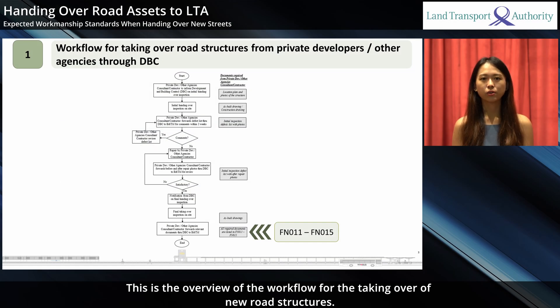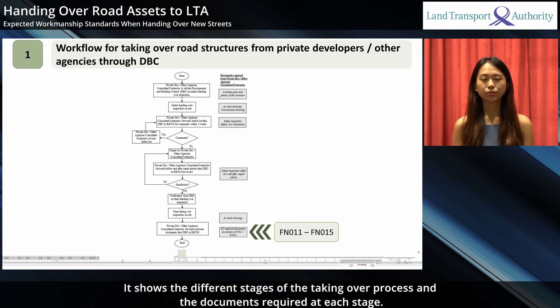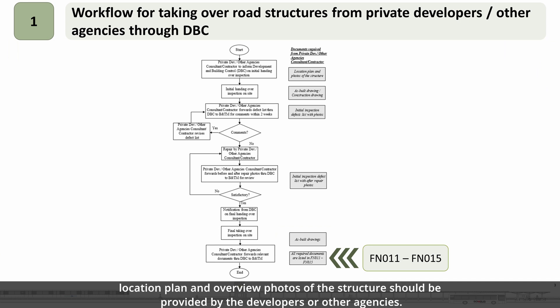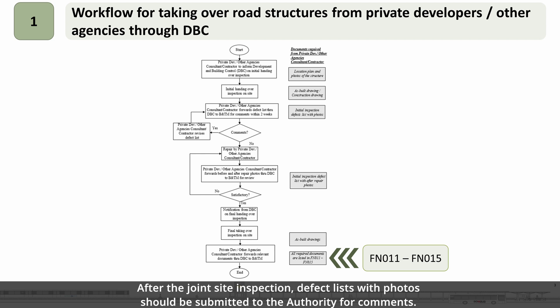This is the overview of the workflow for taking over of new road structures. It shows the different stages of the taking over process and the documents required at each stage. At the initial stage, a location plan and overview photos of the structure should be provided by developers or other agencies. As-built drawings should be provided prior to the joint site inspection. After the joint site inspection, a defect list with photos should be submitted to the authority for comments.